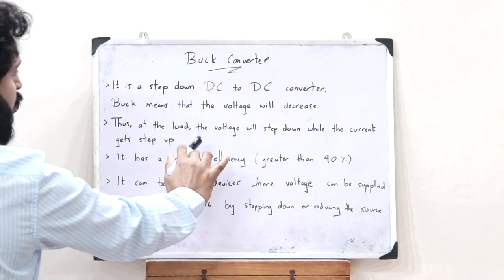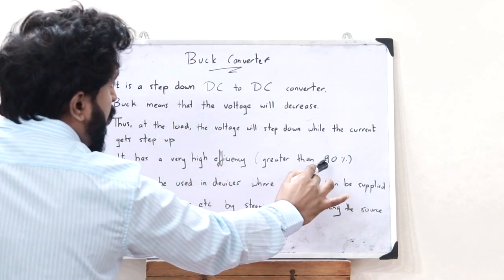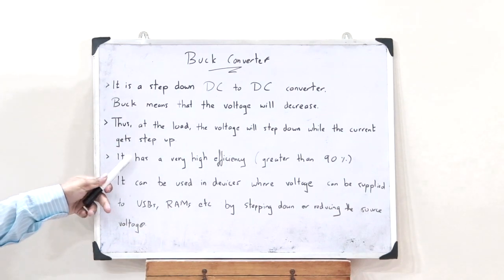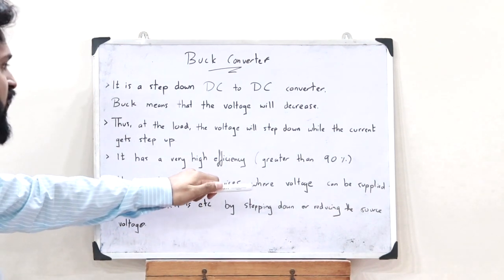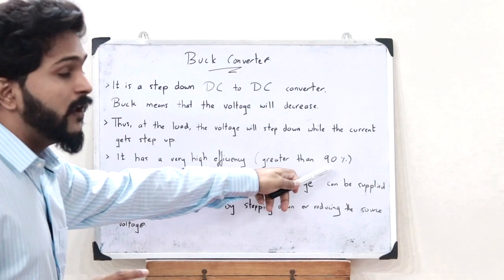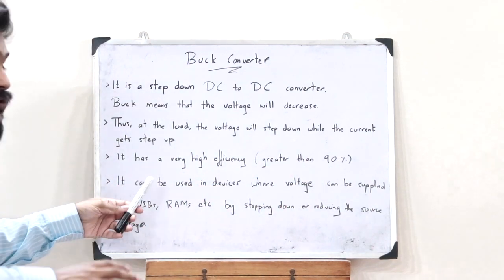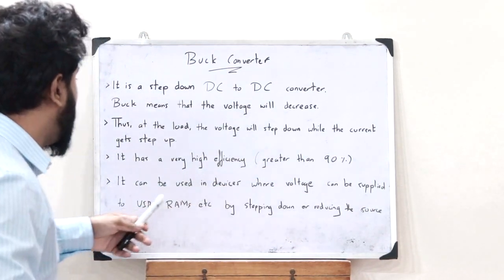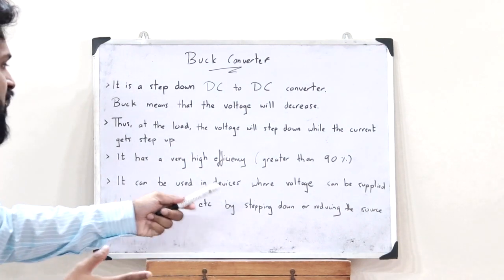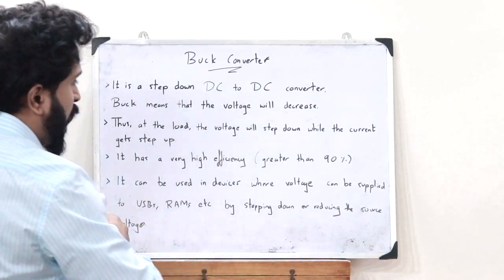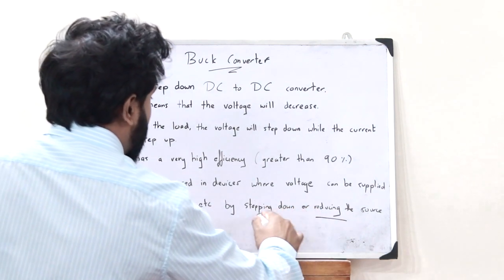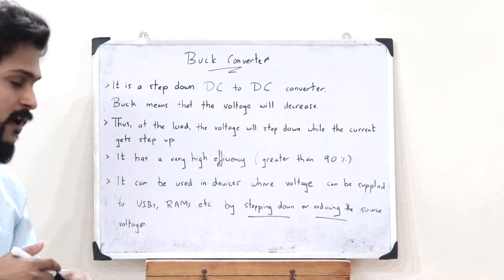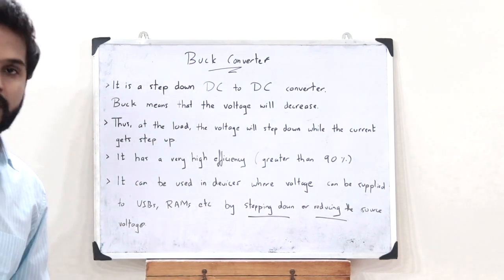At the load, the voltage steps down while the current steps up. It has a very high efficiency — greater than 90 percent — and can be used in devices where voltage must be supplied to USBs, RAMs, and similar components by stepping down or reducing the source voltage. This is the basic idea behind buck converters.